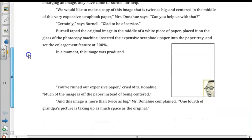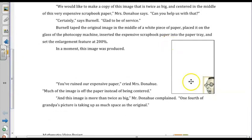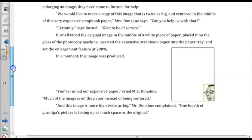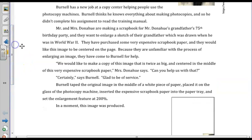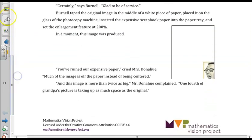Well, when Bernal enlarges the figure, it ends up looking like this. So we can see that Bernal did not actually put the sketch of the grandfather in the center. So something is off about this enlargement. Mr. and Mrs. Donahue did say that they wanted the image to be twice as big. So now we need to figure out what exactly happened.